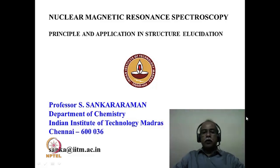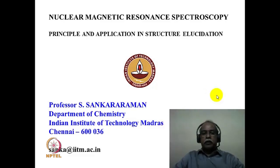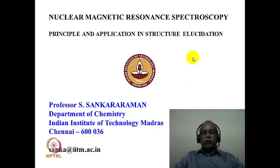Hello, welcome to module 4 of the course on application of spectroscopic methods in molecular structure determination. In this module, we will continue with NMR spectroscopy and see some NMR spectra of very simple organic compounds. We will try to interpret the spectrum of these compounds and familiarize ourselves with chemical shift and coupling constant values. Molecular structure determination by NMR spectroscopy is all about pattern recognition. If one can recognize a pattern and identify the structural feature responsible for it, then it solves the problem of structural elucidation.